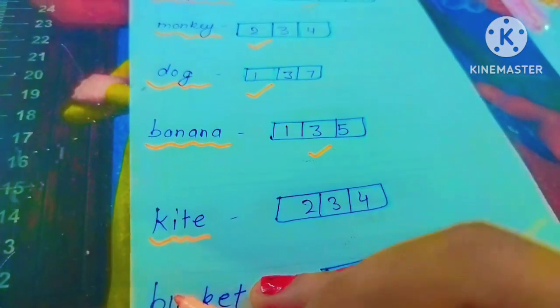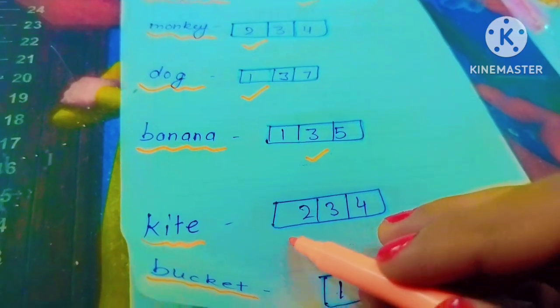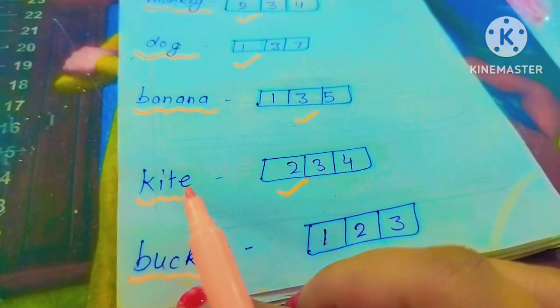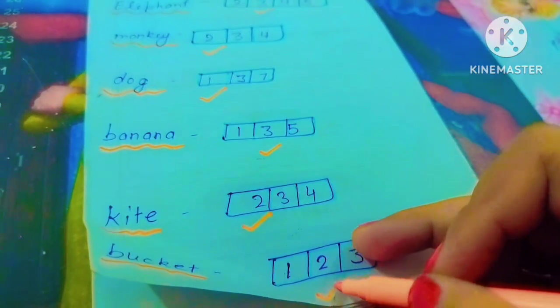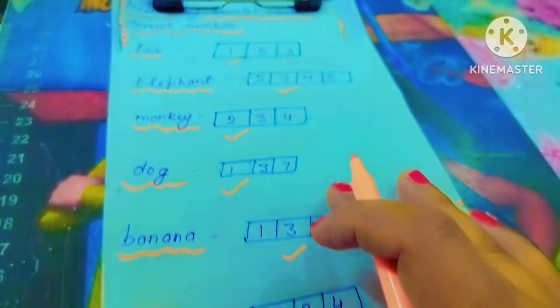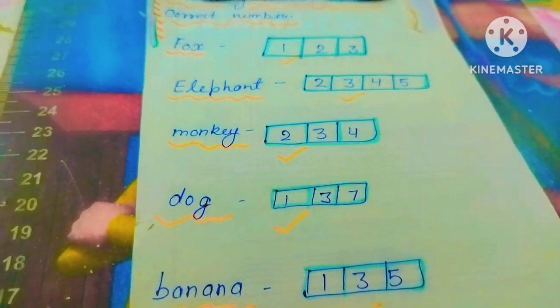In the kite we are showing how many vowels are there - we will tick 2. So we will count the vowels when we are showing the correct number.